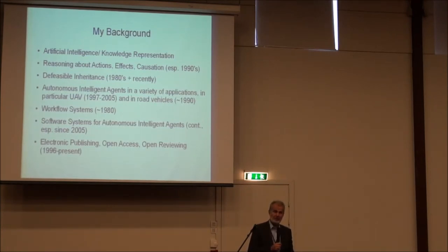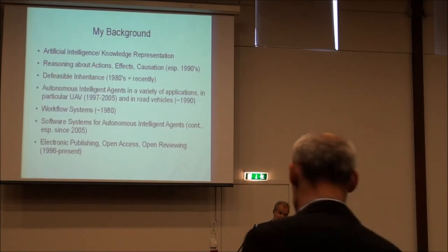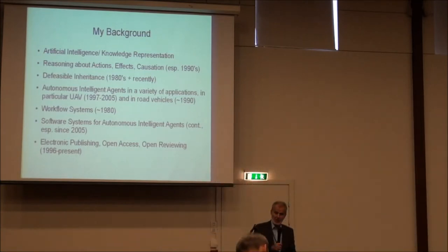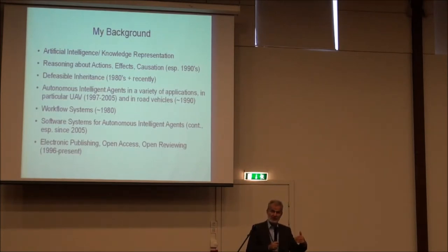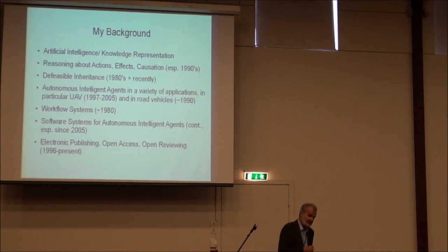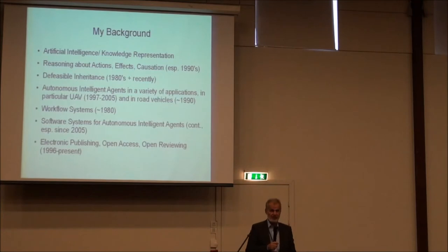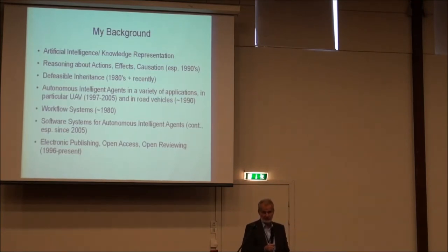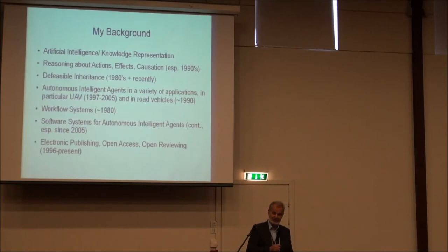These include: reasoning about actions and effects for the purpose of planning and prediction, and for the execution of actions in autonomous robots. Defeasible inheritance — what happens if you have a hierarchy of concepts that is not entirely strict but has exceptions. For example, mammals live on the ground, with the exception of whales, which are mammals but live in the water. We have to handle these types of exceptions in an ontology, and this may sound simple, but there are a number of intriguing difficulties.